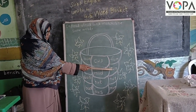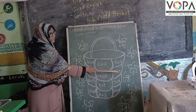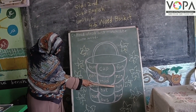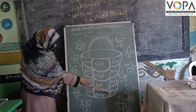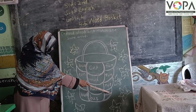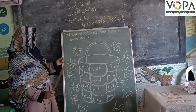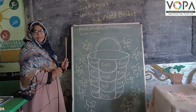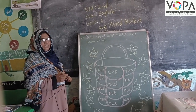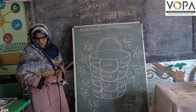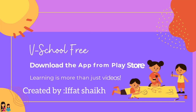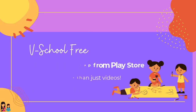R, U, N — Run. N, U, T, D — Nut. M, U, G — Mug.